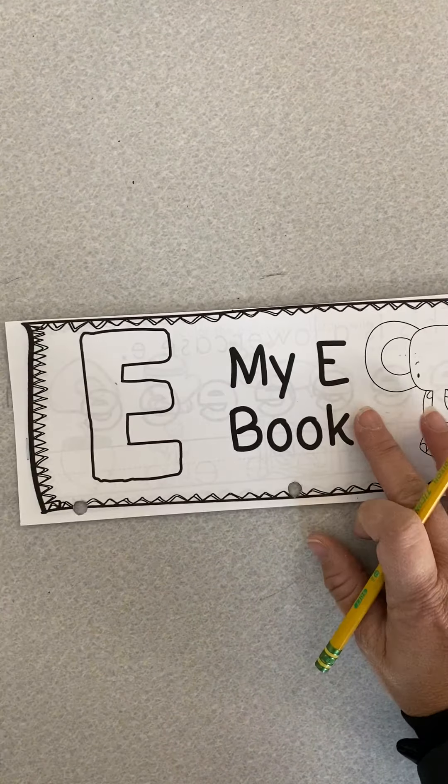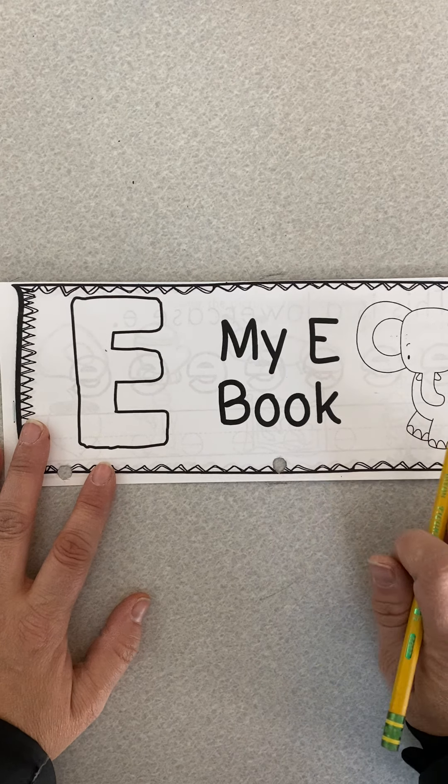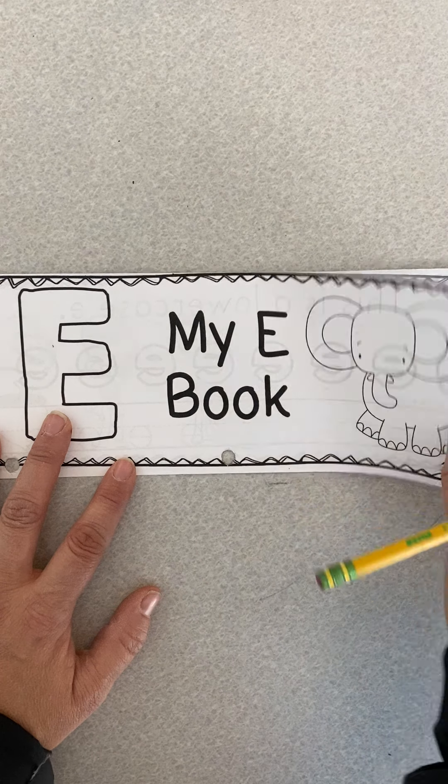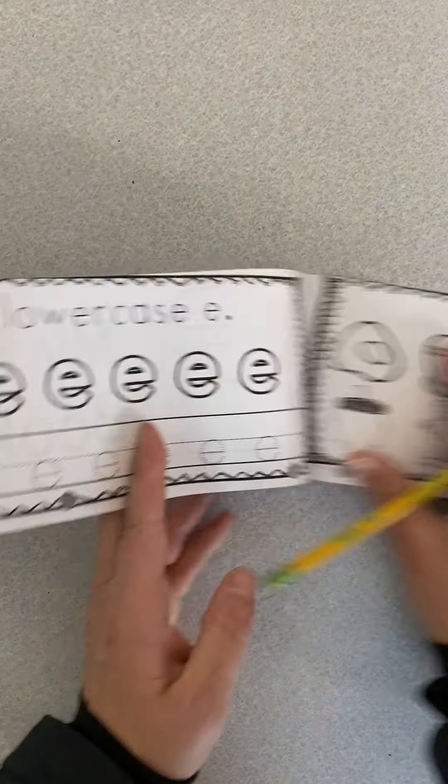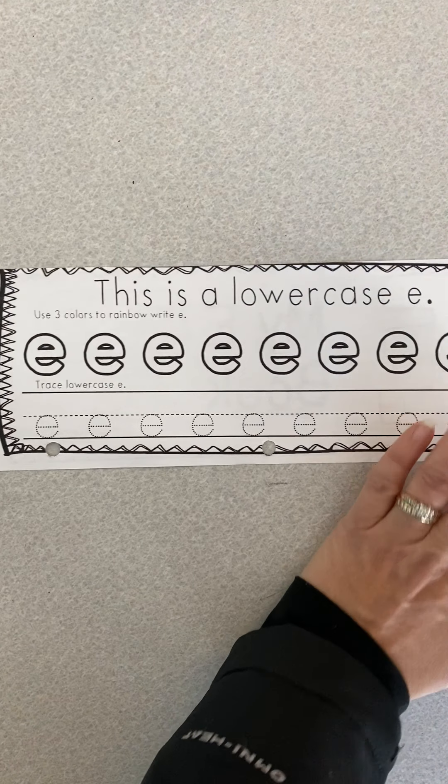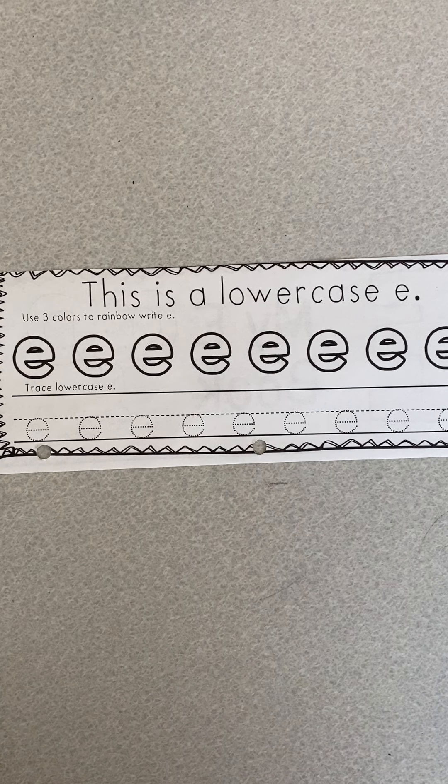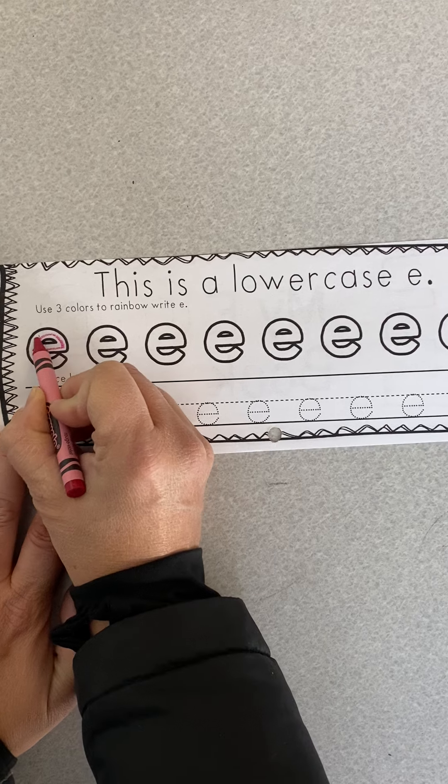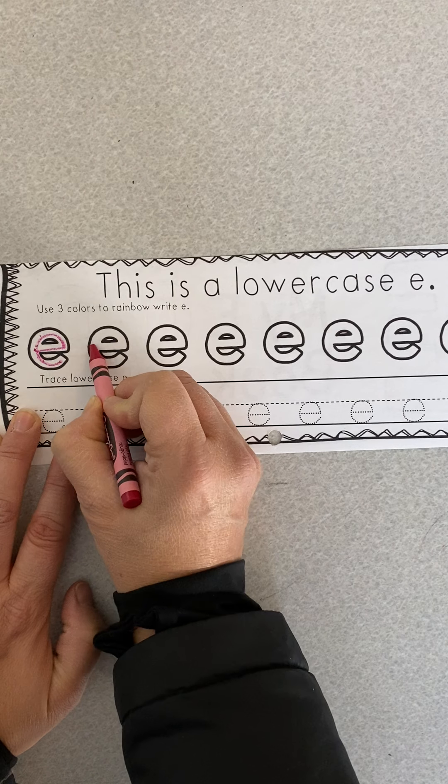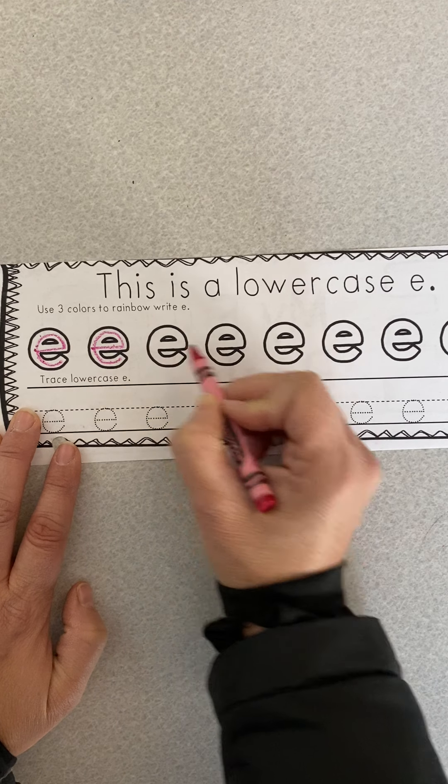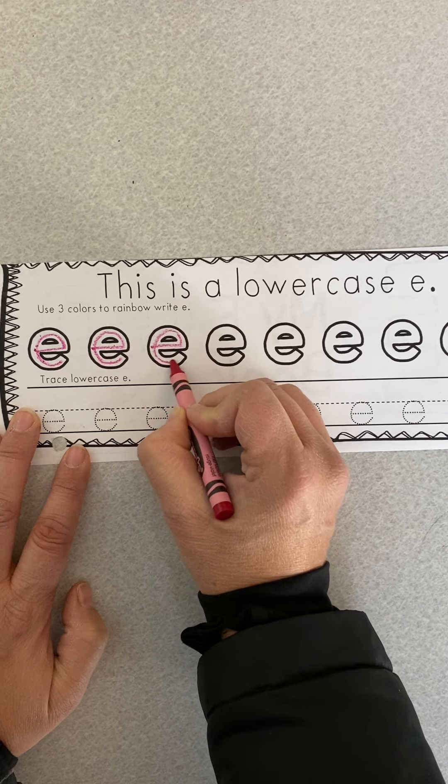Next, we're going to be working on our letter E book. E says eh, eh, like elephant. Write your name on the front. Turn to the inside. You're going to rainbow write your lowercase E's. Remember, they start in a very specific place. Lowercase E's start here. Hit the ball, run around the bases and stop. Don't start over here and make them backwards. Start here. Hit the ball, run around the bases and stop.